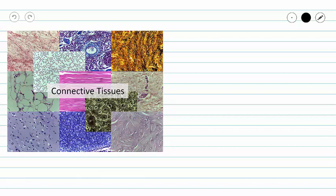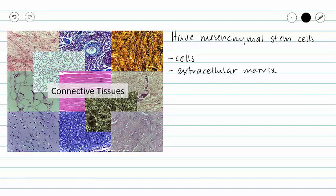Before we move into the details of fibrous cartilage, let's remember what unites all of our connective tissues. All of our connective tissues have a mesenchymal origin and so they have mesenchymal stem cells. All of our connective tissues have two major components: cells and extracellular matrix. Our extracellular matrix itself can be divided into two components: ground substance, which is our fluid component, and our extracellular fibers.